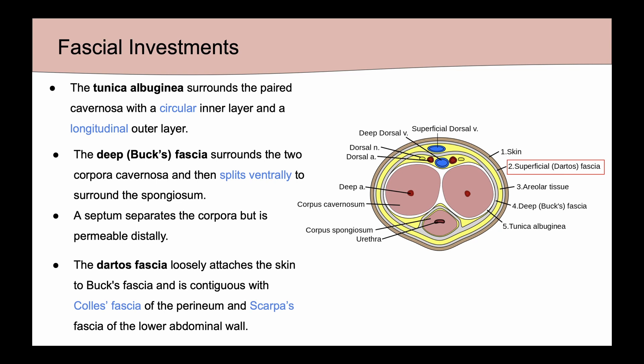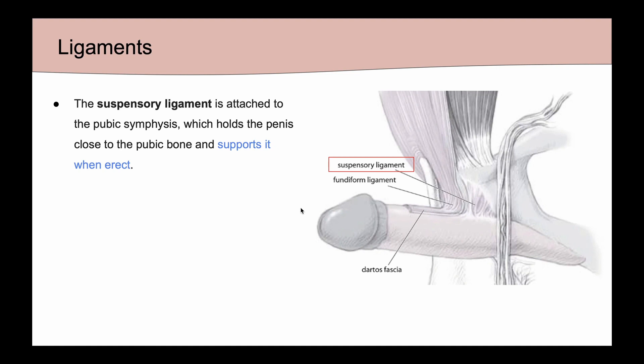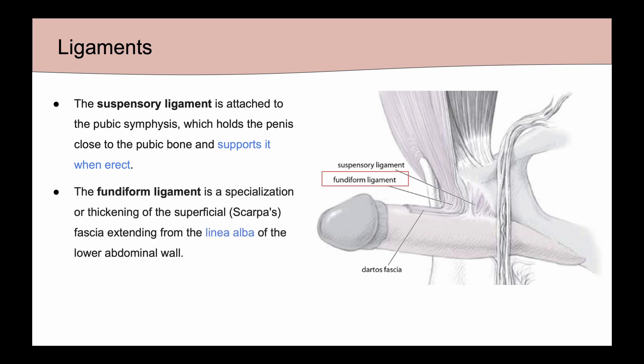When it comes to the ligaments of the penis, there is a suspensory ligament which is attached to the pubic symphysis — this has a role in holding the penis close to the pubic bone and supporting it during erections. Superficial to this is the fundiform ligament, which is a specialization or thickening of Scarpa's fascia extending from the linea alba.